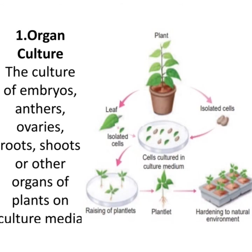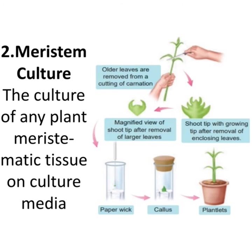Meristem culture is the culture of any plant meristematic tissue on culture media. In the image on the right, older leaves are removed from a carnation cutting, revealing the shoot tip with the growing tip; after removal of enclosing leaves, the magnified shoot tip is introduced into culture medium, the meristem develops into a callus, and this callus is individualized in culture medium to form plantlets.